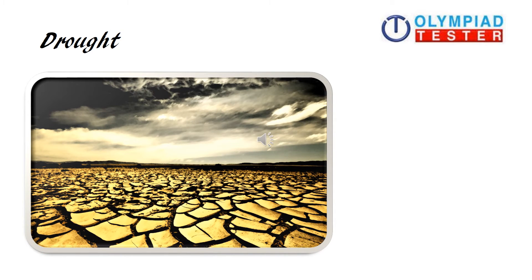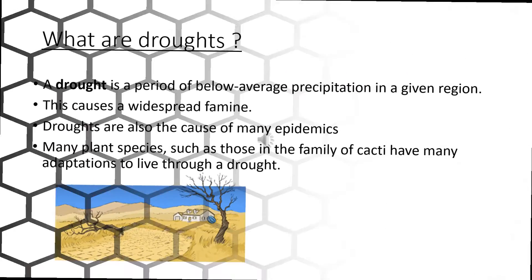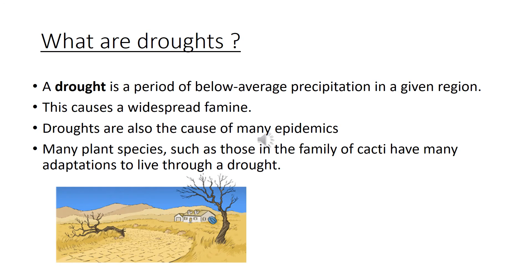Droughts. What are droughts? A drought is a period of below average precipitation in a given region. This causes a widespread famine. Droughts are also the cause of many epidemics. Many plant species, such as those in the family of cacti, have many adaptations to live through a drought.